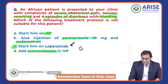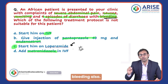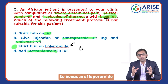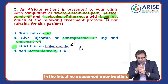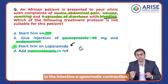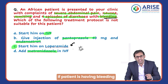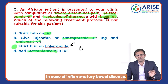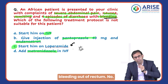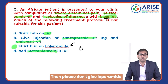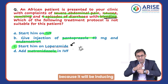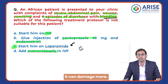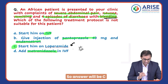In this case, the patient is having bleeding as well. Loperamide causes spasmodic contractions in the intestine. In any patient who has rectal bleeding — such as in inflammatory bowel disease — whenever you see bleeding from the rectum, please do not give loperamide, because it induces spasmodic contraction, which can cause more and more bleeding and further damage. So the answer is C.